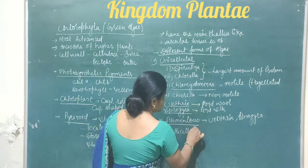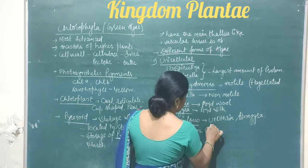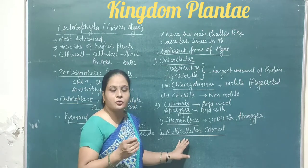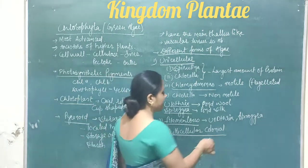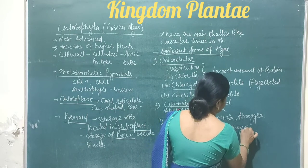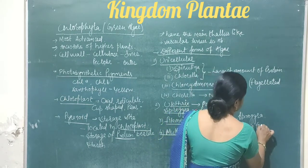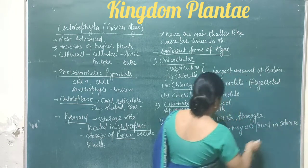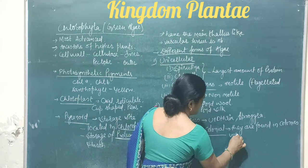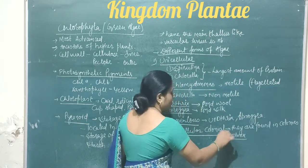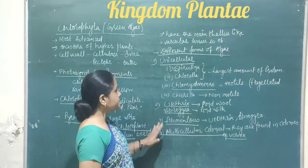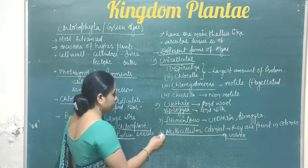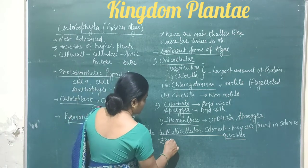Next is the multicellular colonial algae. Multicellular colonial means the algae are composed of multiple cells and are found in colonies. The example is Volvox, which is the colonial green alga. These are certain descriptive points about the green algae.